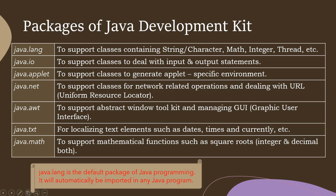Java.text is used for localizing text elements such as dates, times, and currency. If you want to display the current date or time you use java.text and call the relevant functions to display the system time and date. Java.math supports mathematical functions such as square roots, cube roots, and many other mathematical functions for both integers and decimals. You include java.math so that these ready-made functions — like finding a square root or cube root — are available in the program.